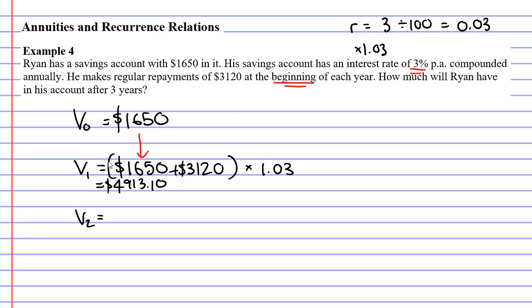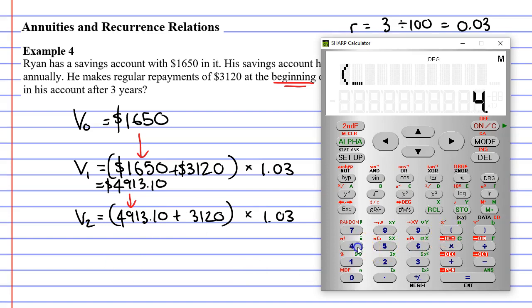Let's now move on to V2, which represents the value of our investment by the end of the second year. Once again, we take the previous result and use this in our calculation. Remember that we add on our repayment before we increase the amount by 3%. Our repayment stays the same each time, $3,120. And I need to put these values in brackets. This forces our calculator to add the amounts before we multiply it by 1.03. So we go brackets, $4,913.10 plus 3,120, close our brackets, times 1.03.